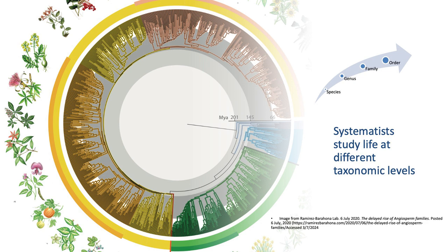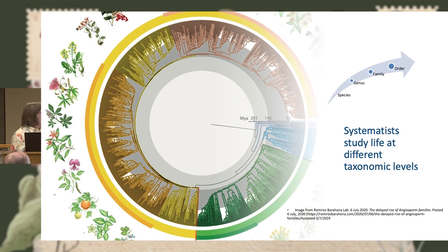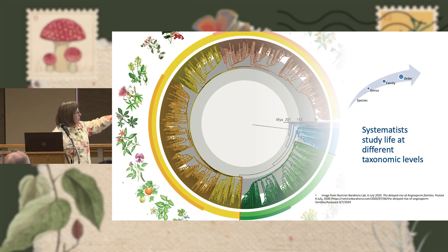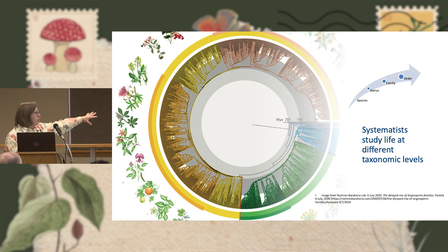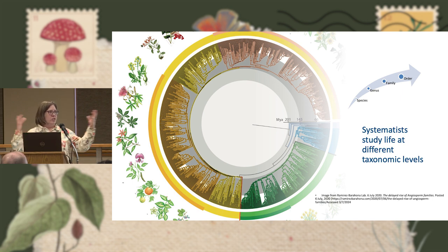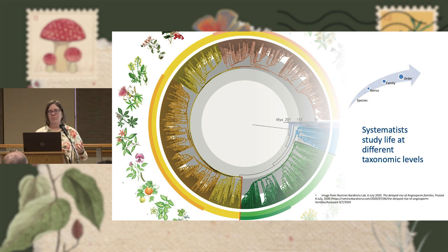In addition to looking at different aspects of life like taxonomy, classification, phylogeny, and evolutionary processes, systematists also study life at different taxonomic levels. This diagram is actually a tree representing relationships among the flowering plants, of which there are over 300,000 species described in science so far. Some people are looking at large-scale relationships among families and groups, and then there are folks like me that study at a much smaller, finer level — relationships among species in a particular genus, in a particular family.